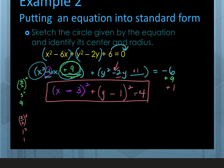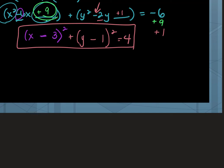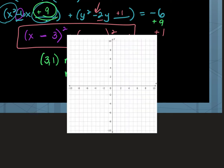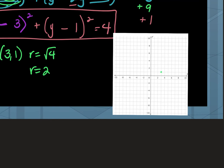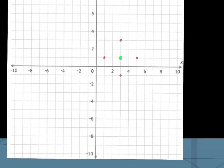Now we can identify the circle's parts. The center is the opposite of what follows x and y, so the center is (3, 1). The radius is the square root of the right-hand side: √4 = 2. Technically ±2 when we square root both sides, but radius is always positive because it's a length. Then plot the center and go right, up, left, and down 2 units to sketch the circle.